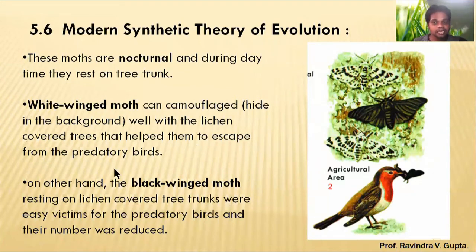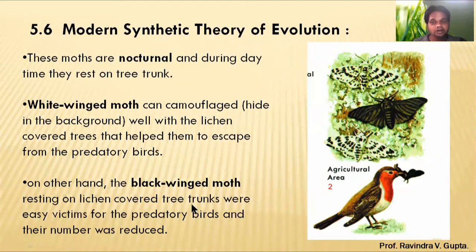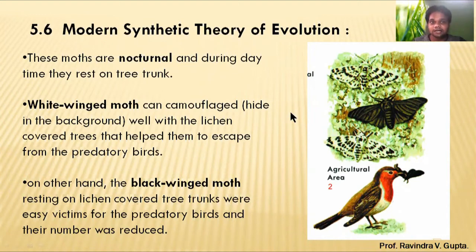On the other hand, black-winged moths resting on lichen-covered tree trunks were easily victimized because predatory birds could spot them from far away. Ultimately, the black color species remained low in number.